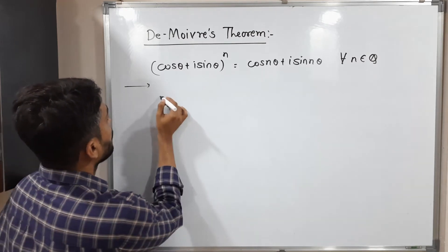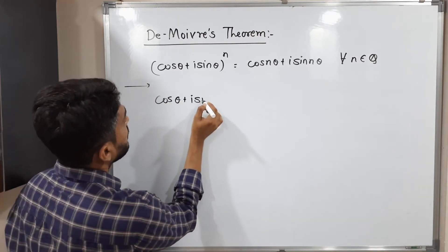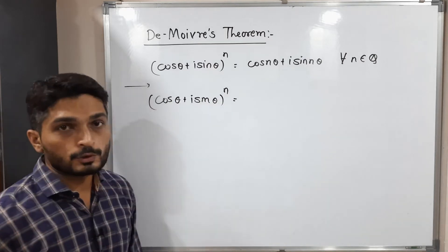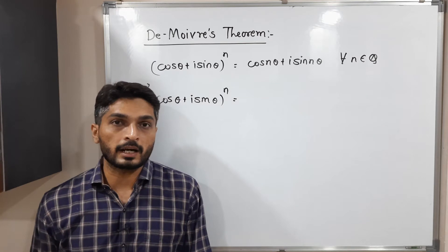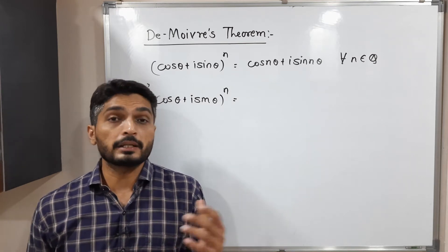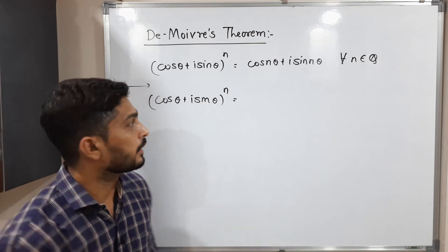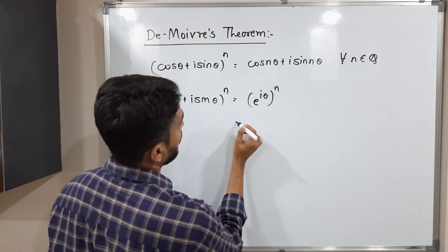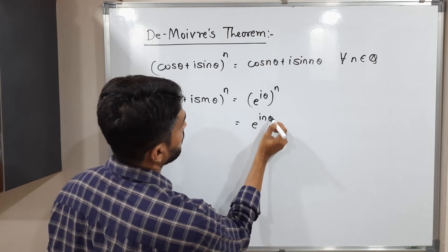So let us consider (cos θ + i sin θ)^n. So this is equal to, you know that cos θ + i sin θ can be replaced by, can be written as e^(iθ). So therefore we can write (e^(iθ))^n. So this is nothing but e^(inθ).